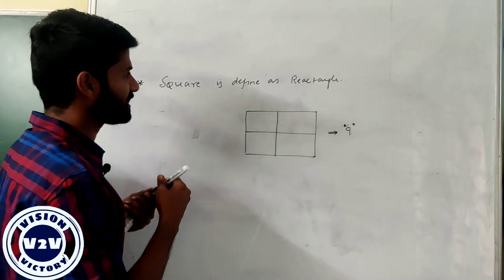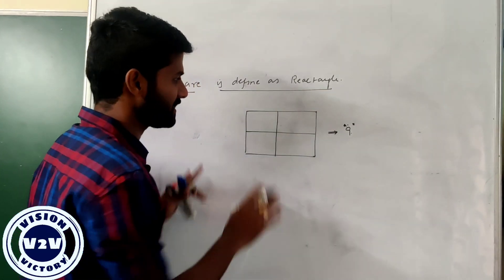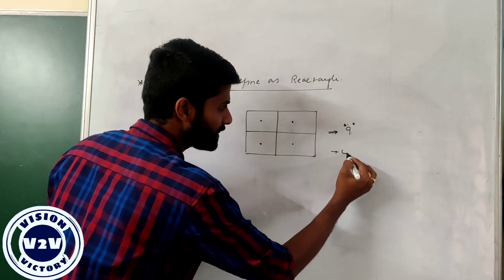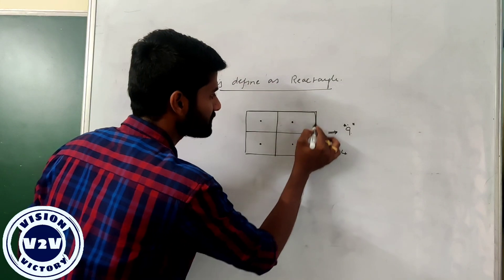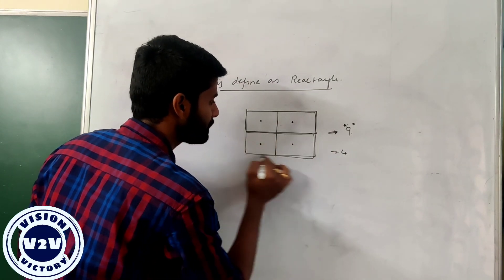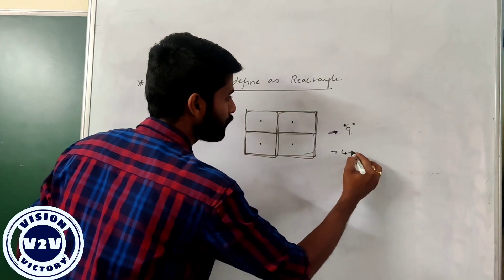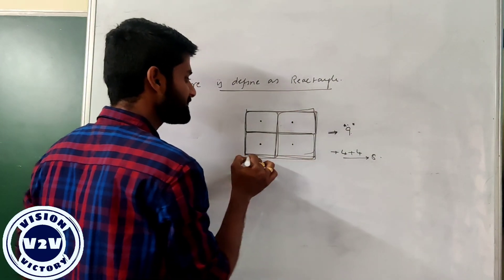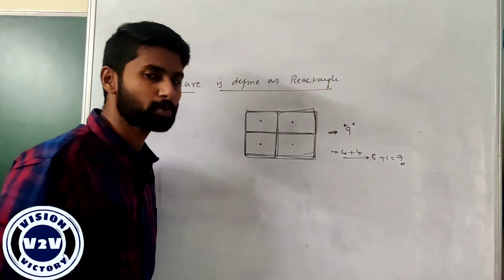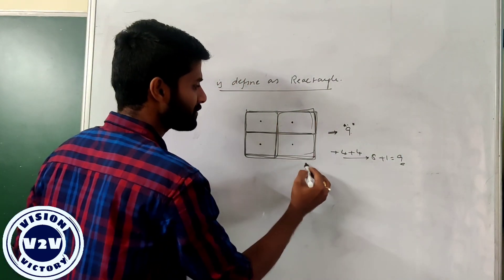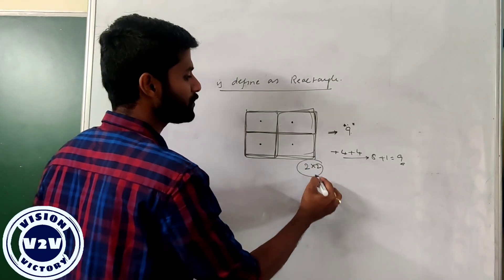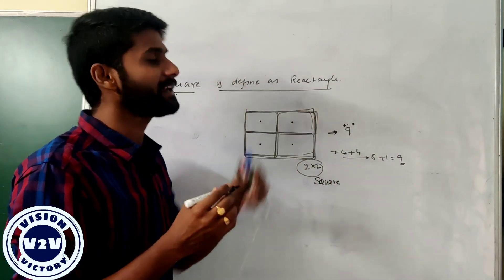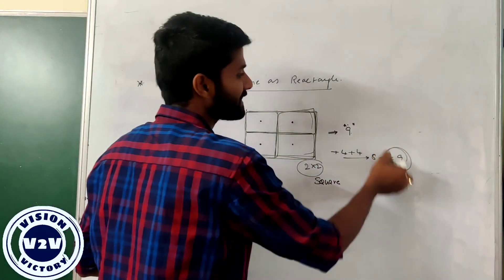A common doubt: every square is defined as a rectangle. When counting this 2×2 figure: 1, 2, 3, 4 — we have 4 individual rectangles. Combined together: 4 plus 4 equals 8. But the entire box is also considered as a rectangle — that is why 8 plus 1 equals 9. The entire box is a 2×2 matrix, so we can define it as a square, but the property says a square can be counted as a rectangle. That is why the total number of rectangles in this box is 9.